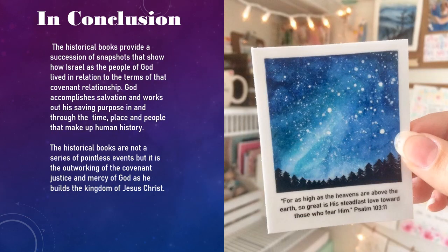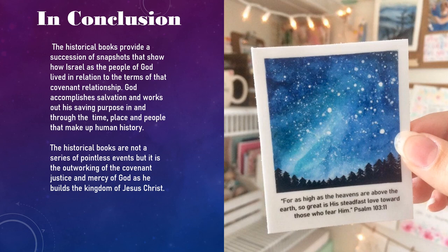In conclusion, I recommend continuing your reading and using the book as a point of reference for your sermons, digging into the nuts and bolts. The historical books provide a succession of snapshots showing how Israel, as the people of God, lived in relation to the terms of their covenant relationship. Covenant relationship is another key word: God accomplishes salvation and works out his saving purpose in and through time, place, and people that make up human history. The historical books are not a series of pointless events, but the outworking of the covenant justice and mercy of God as he builds the kingdom of Jesus Christ. Make sure that you comment below and stay tuned to the next video.